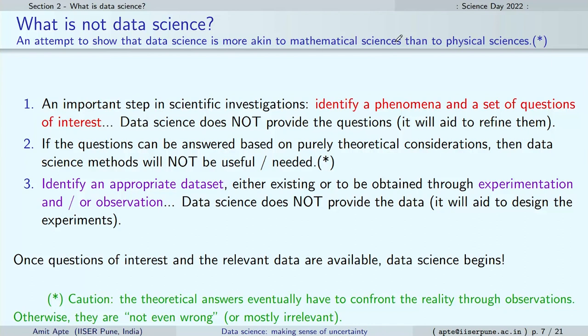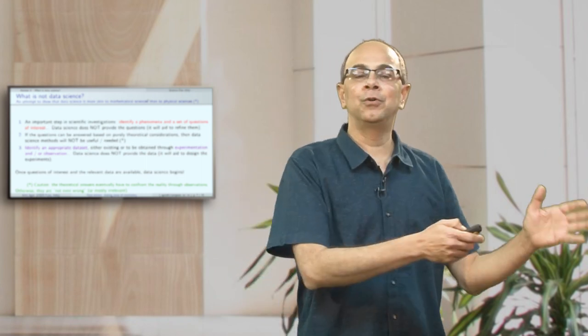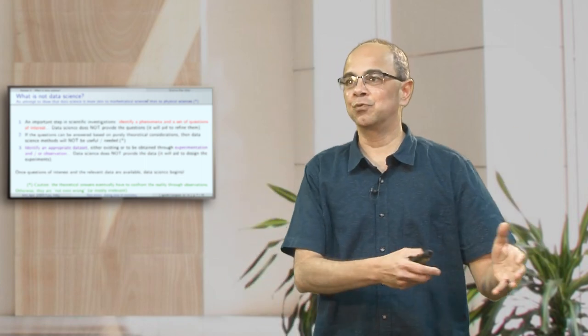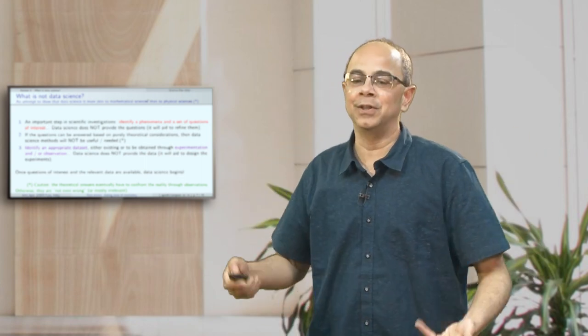An important step in scientific investigation is to ask a question — identify something you are curious about that you haven't fully understood — and then come up with a set of questions about that phenomenon. But typically, data science is not what comes up with these questions; the questions come from innate human curiosity. Of course, data science is useful to refine these questions once you have some observations.